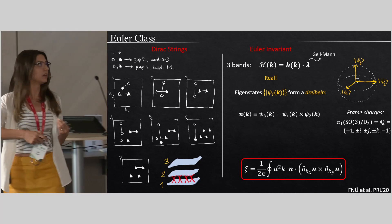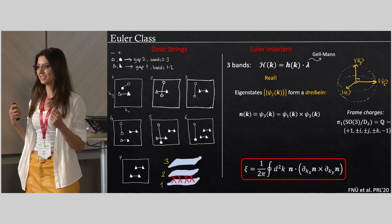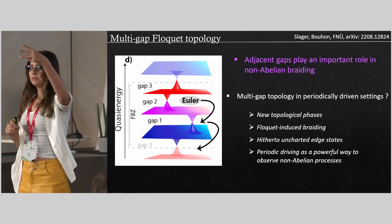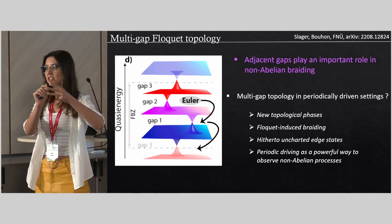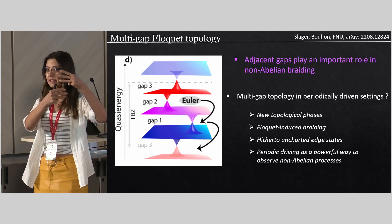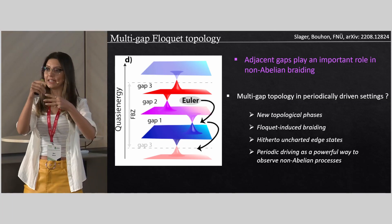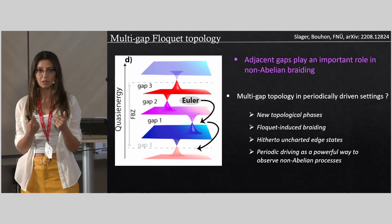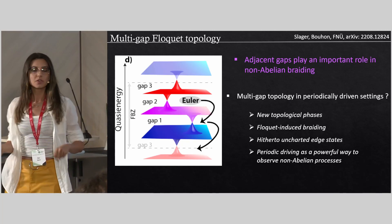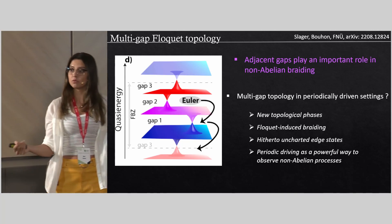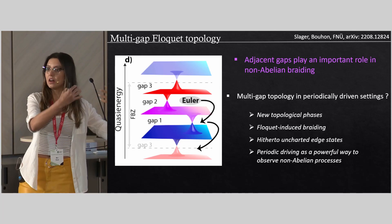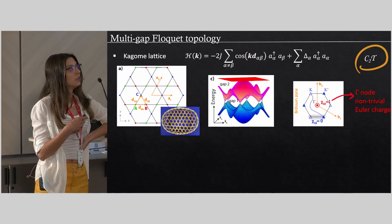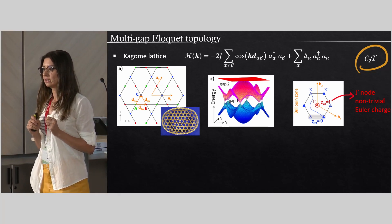I'll focus on the Dirac string picture as it is nicer to illustrate. With the Non-Abelian braiding of band nodes in adjacent gaps, an important question arises for Floquet systems: with three bands I have infinitely many replicas, plus one additional gap between the replicas — the π gap — where I can have band nodes as has been measured in Munich, and I can braid those band nodes too. Floquet is thus a nice way of modifying the Hamiltonian, allowing us to reach Non-Abelian Euler phases and new edge states and topological phases.